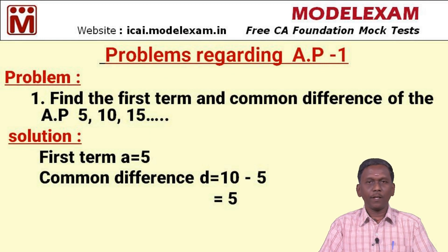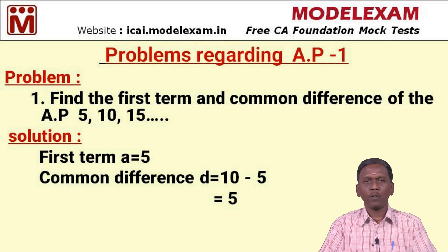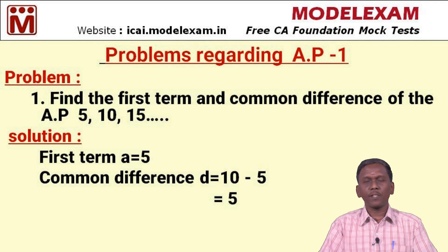Problem: Find the first term and the common difference of the AP 5, 10, 15, ... The first term t1=5. The common difference d = 10−5 = 15−10 = 5.